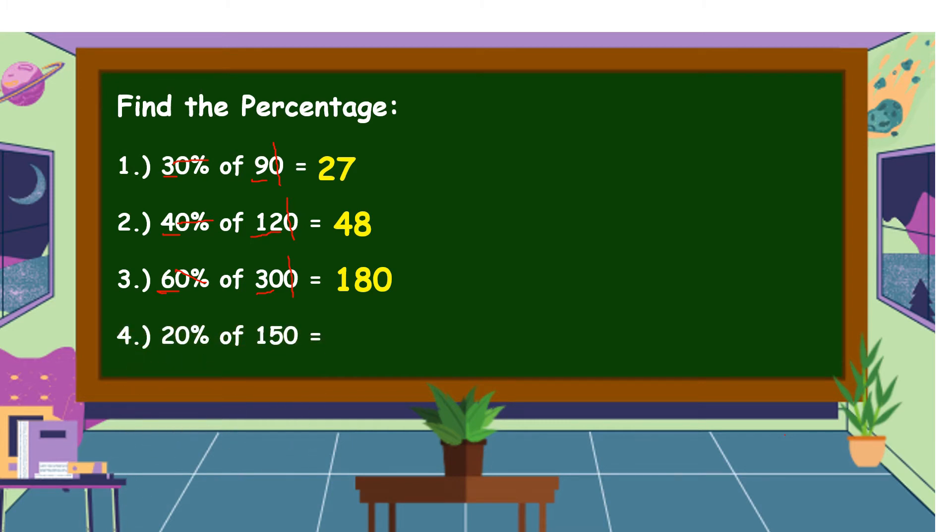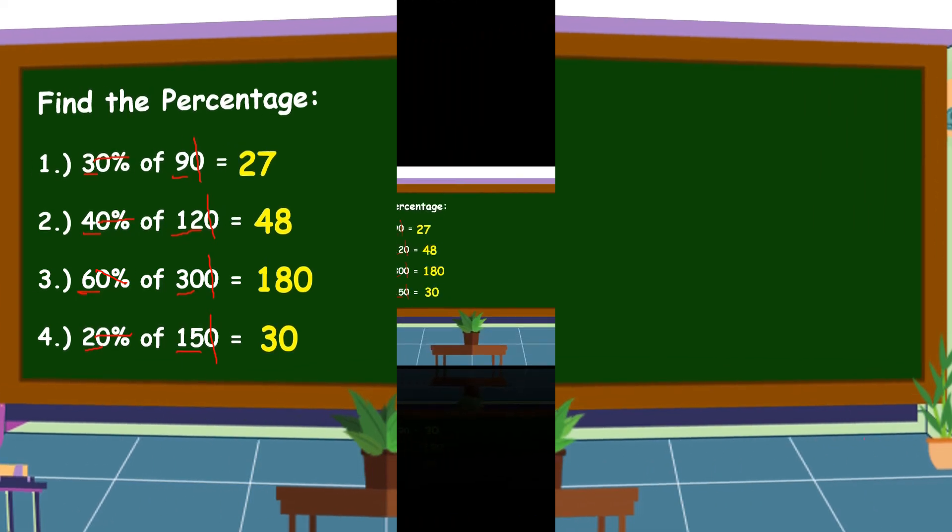Another example, 20% of 150. What is your answer? Very good. The answer is equal to 30. Omit 0 and the percent sign, then cancel 0 in 150. Multiply 2 and 15, and it gives the answer of 30.